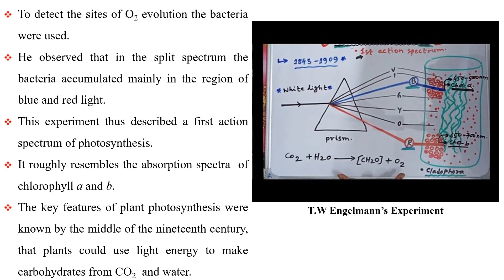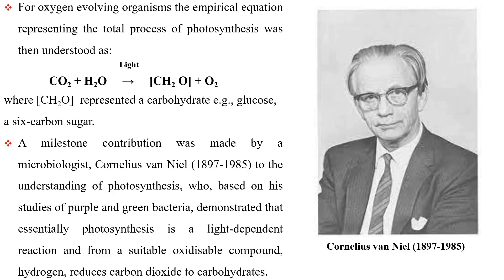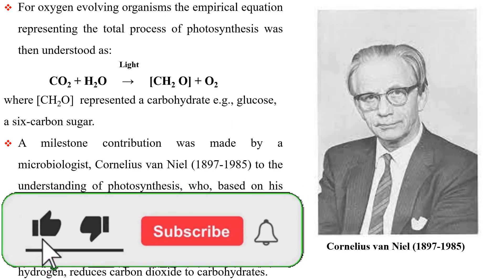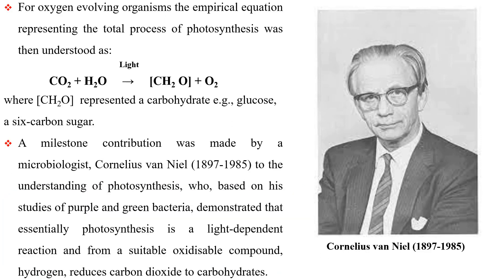By the middle of the 19th century, the key features of plant photosynthesis were known — that plants could use light energy to make carbohydrates from carbon dioxide and water. For oxygen-evolving organisms, the empirical equation representing the total process of photosynthesis was then understood, where CH2O represented a carbohydrate, e.g., glucose, a 6-carbon sugar. A milestone contribution was made by microbiologist Cornelius Van Neel, who, based on his studies of purple and green bacteria, demonstrated that photosynthesis is essentially a light-dependent reaction in which hydrogen from a suitable oxidizable compound reduces carbon dioxide to carbohydrates.